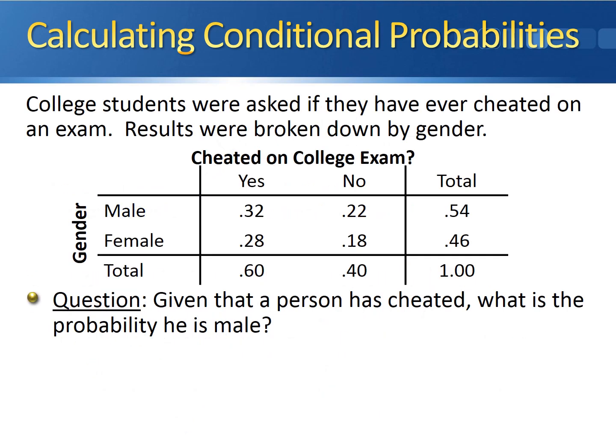Here's an example of calculating conditional probabilities. College students were asked if they have ever cheated on an exam, and results were broken down by gender — gender along the rows, cheated or not along the columns, with joint and marginal probabilities filled in. The question is: given that a person has cheated on an exam, what is the probability that they are male? We're given that the person cheated — that's the information we know — and we want the probability that they are male. So we want P(male | cheated).